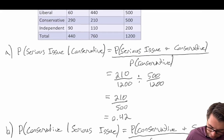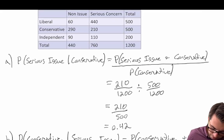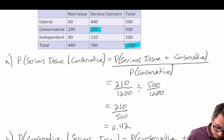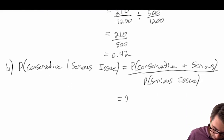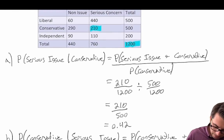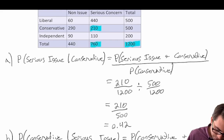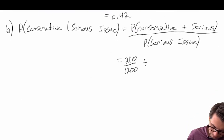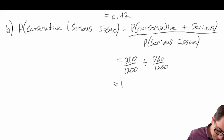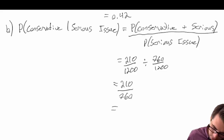We can get these probabilities from our table. The joint probability of conservative and serious concern is 210 divided by 1200. The marginal probability of serious concern is 760 divided by 1200. So we get 210 divided by 1200, divided by 760 divided by 1200, which simplifies to 210 divided by 760, giving us a final answer of 0.2763.